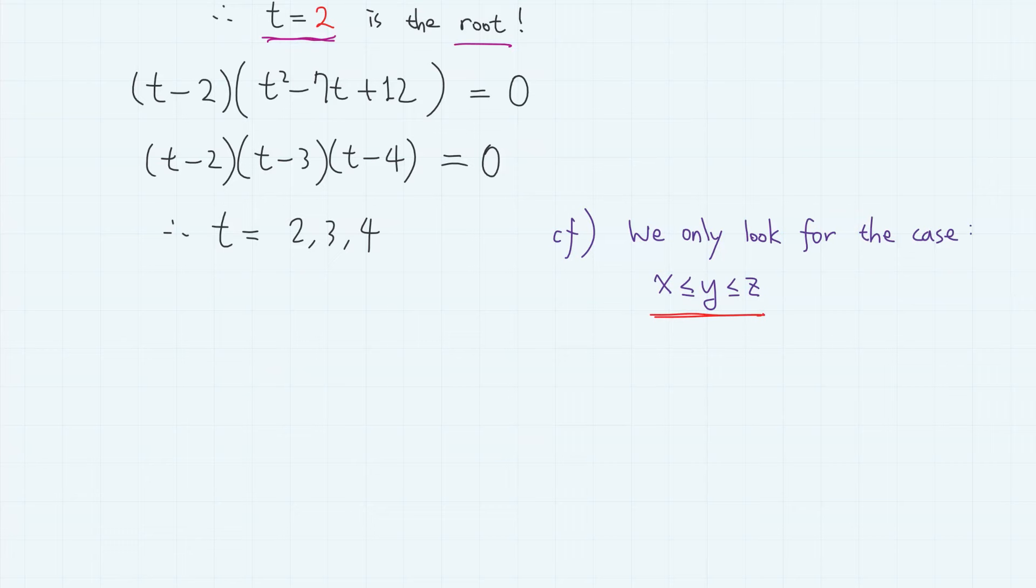And since x is the least root and z is the greatest root, we have x equals 2, y equals 3, and z equals 4.